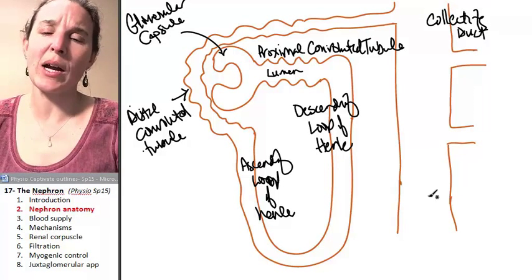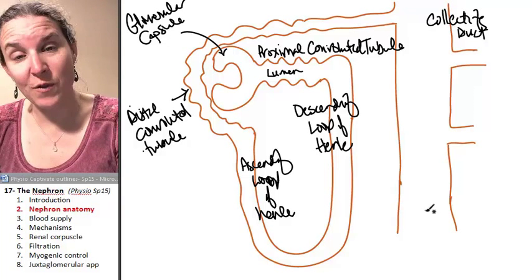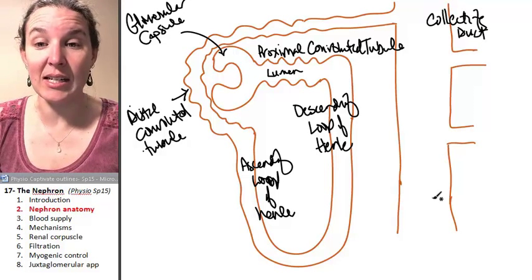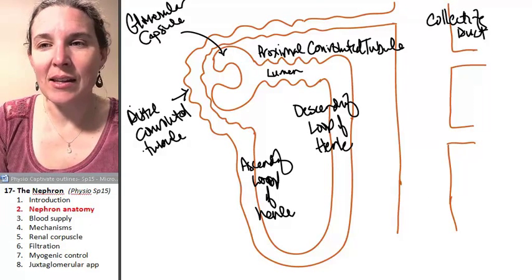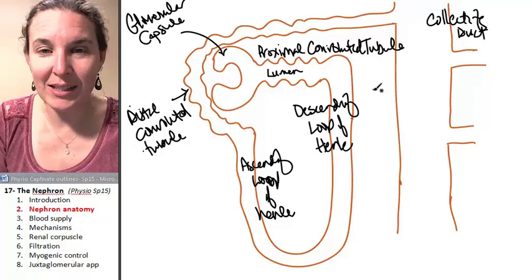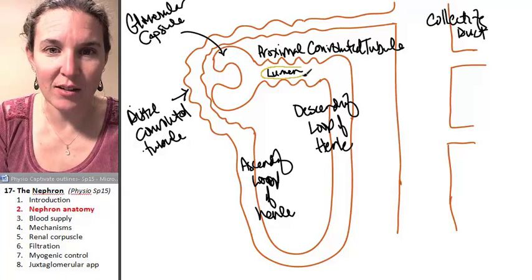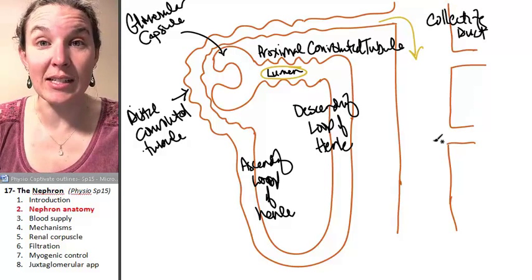And I think it's important to recognize the fact that many nephrons can feed into a single collecting duct. And then keep in mind that in this lumen, this is where we're going to collect filtrate or pre-pee. And ultimately we're going to dump our pre-pee into the collecting duct.